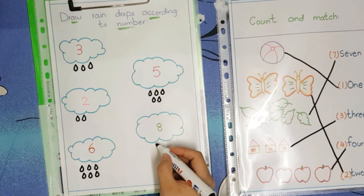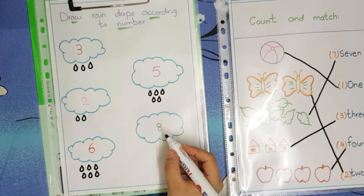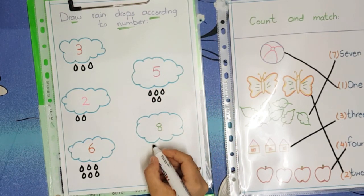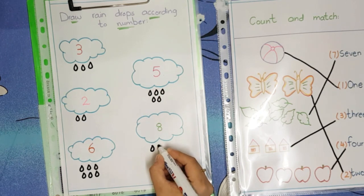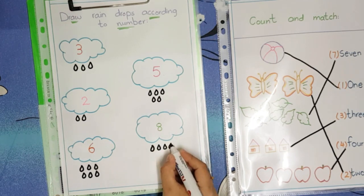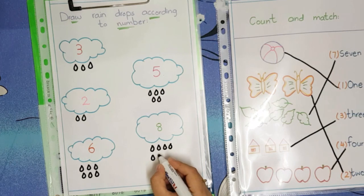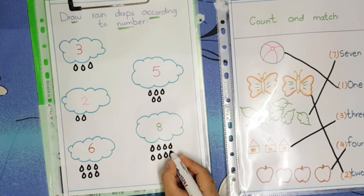Now move to the next cloud. We have number eight. So how many raindrops will we draw over here? We will draw eight raindrops: one, two, three, four, five, six, seven, eight.